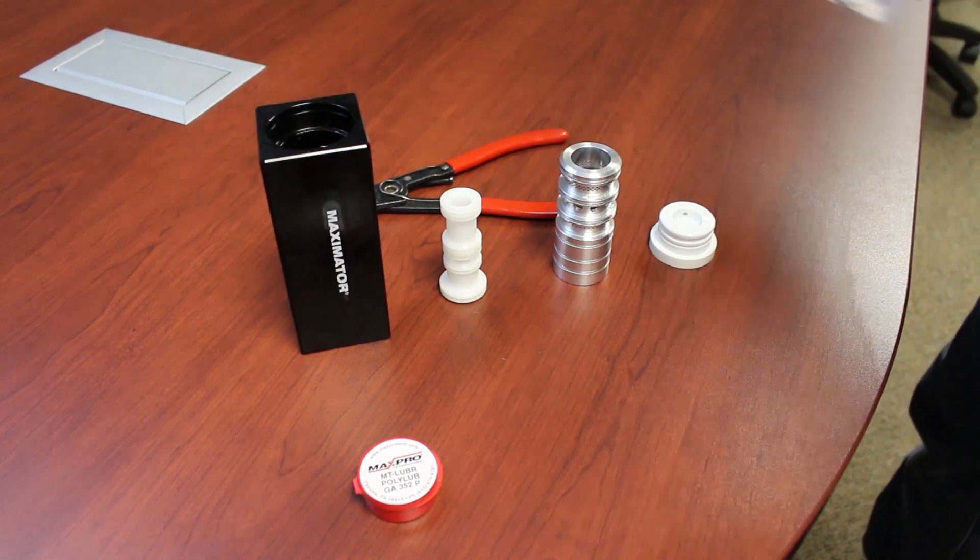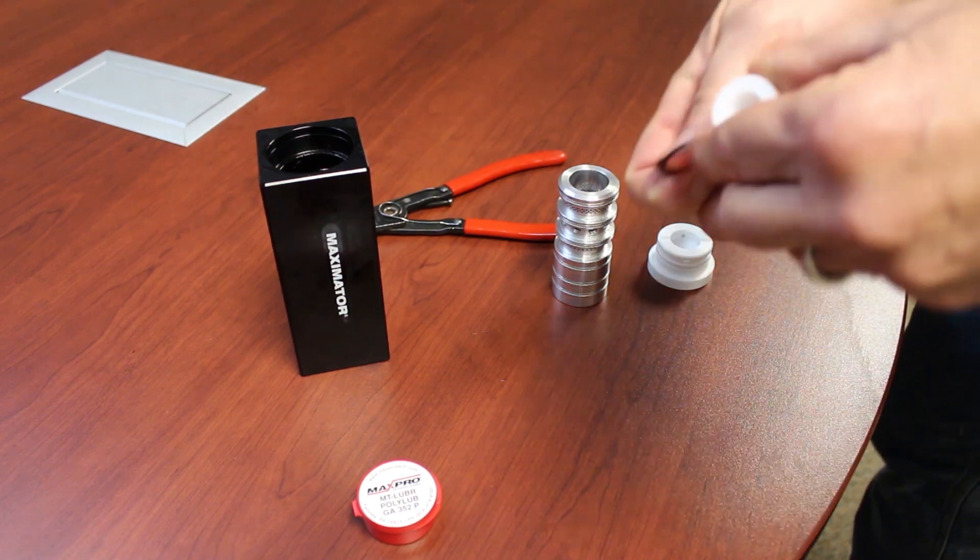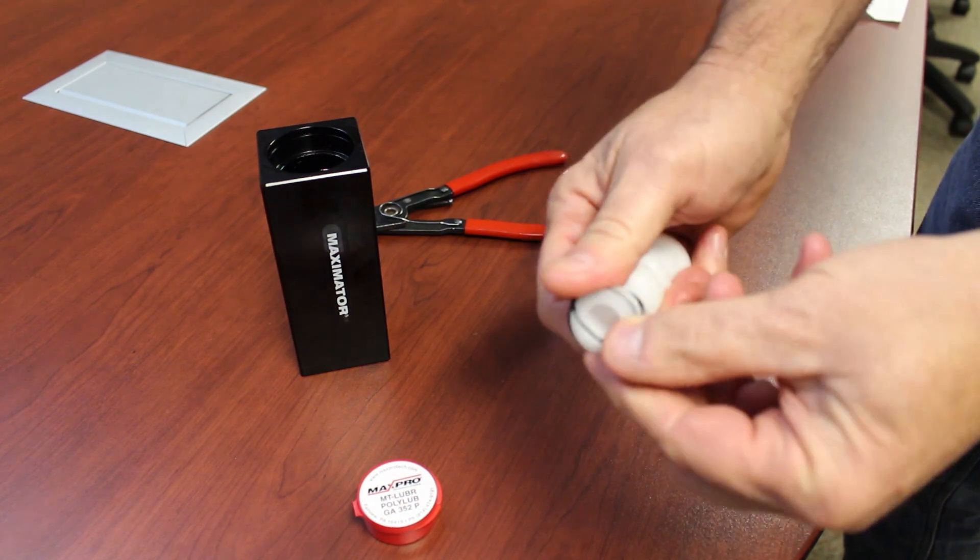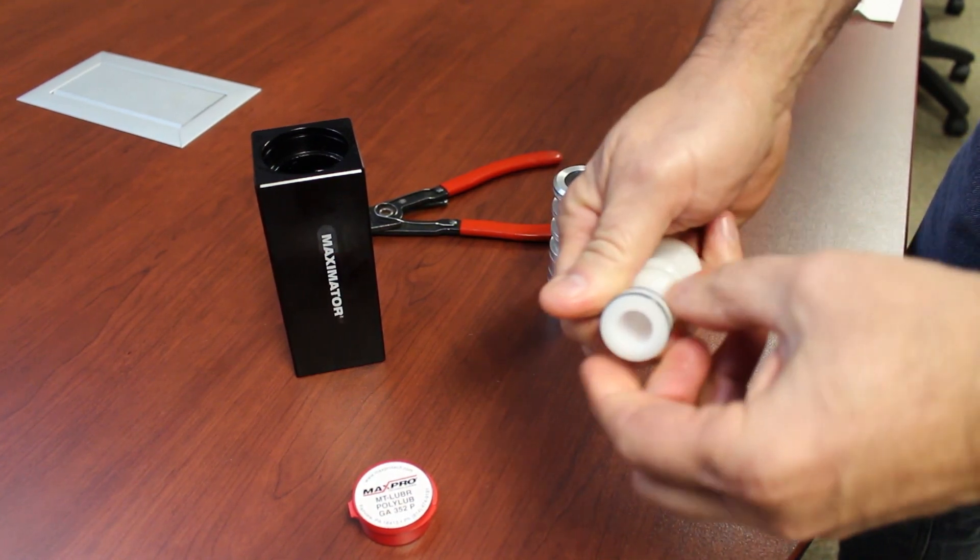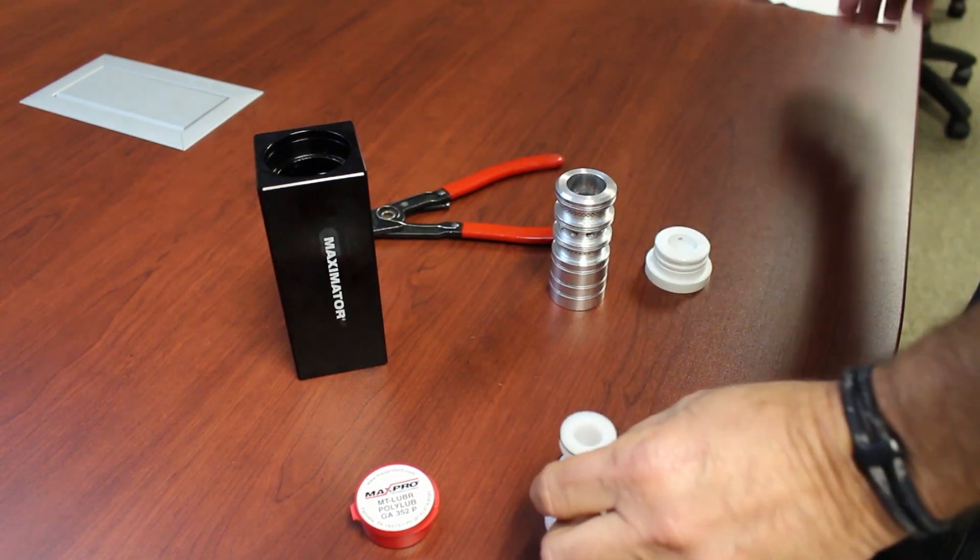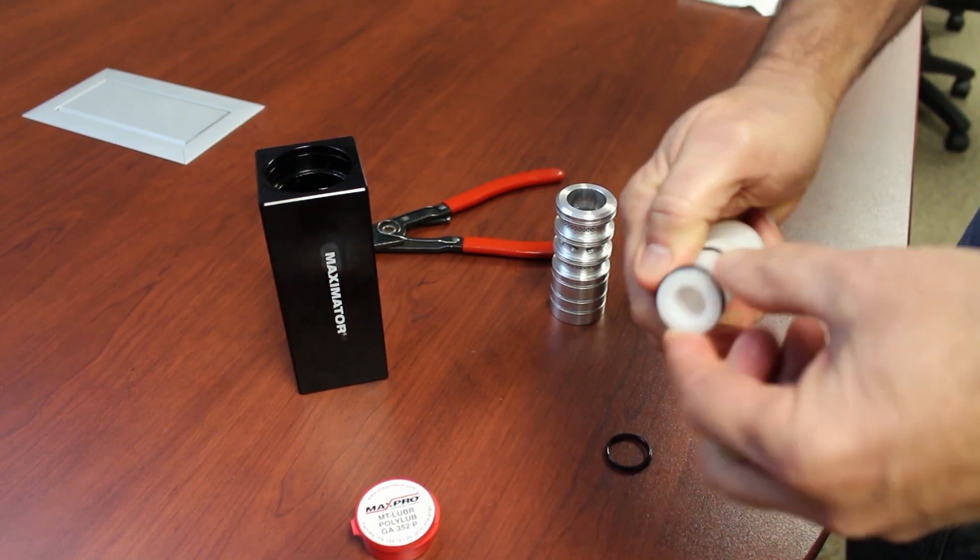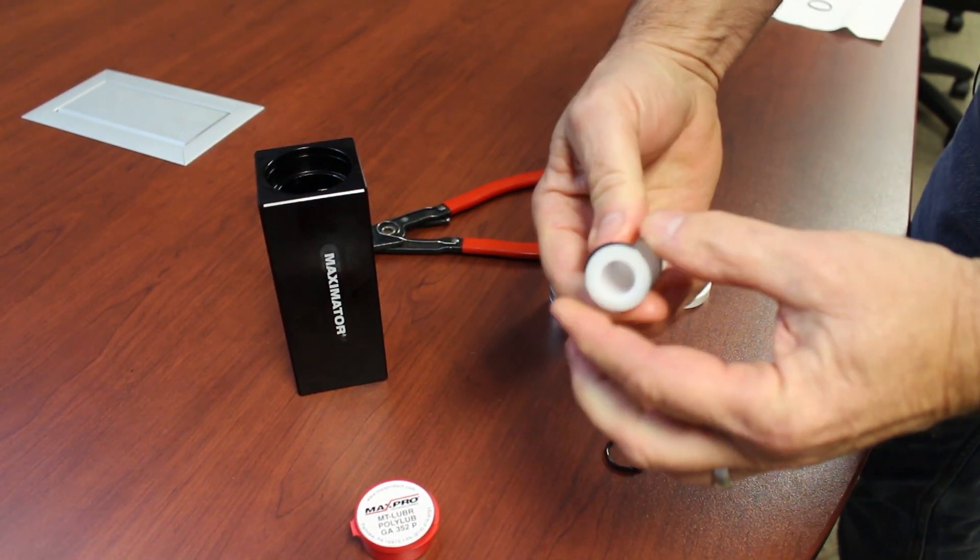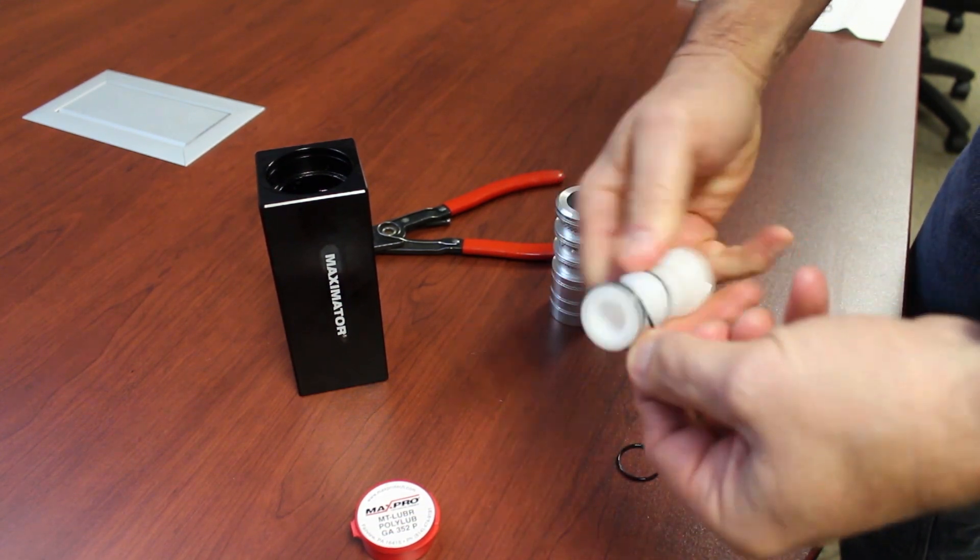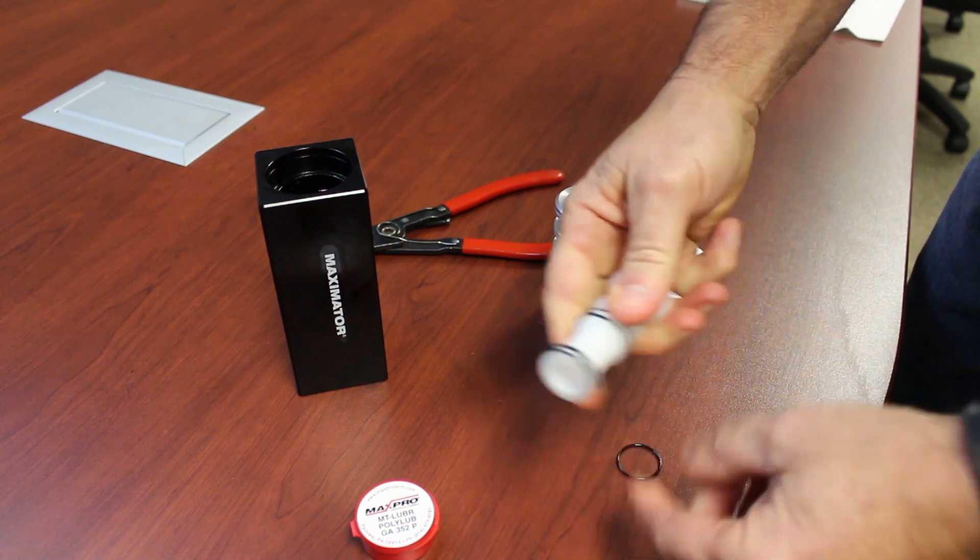First thing we do is put the O-rings on the spool. These O-rings are loose fitting by design; they're not a tight fitting O-ring into the groove. If you put a tight fitting O-ring in there, the spool will not operate the way it's supposed to, so they are loose fitting by design.